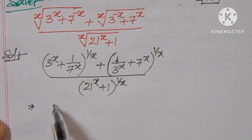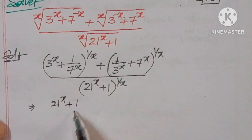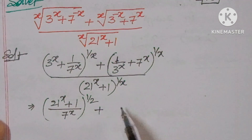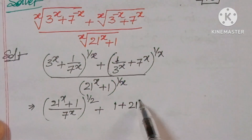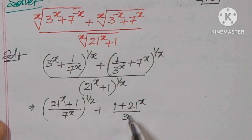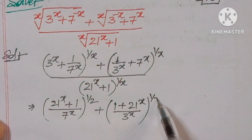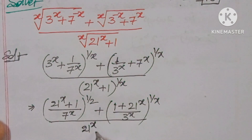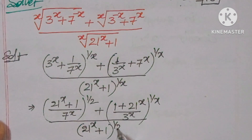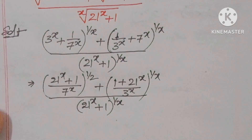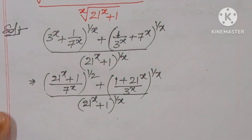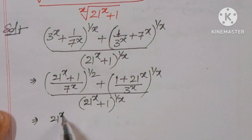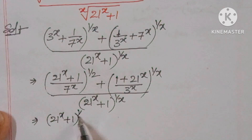Taking the LCM: 21x plus 1 by 7 power x, whole to the power of 1 by 2, plus 1 plus 21 to the power of x by 3 power x, whole to the power of 1 by x. You can take 21 to the power of x plus 1, whole to the power of x, as a common factor.